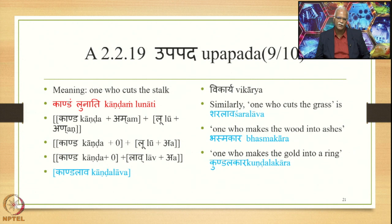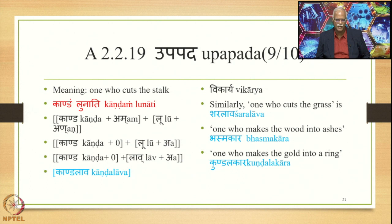For Vikarya Karma, one who cuts the stalk: Kanda Lunati is the Laukika Vigraha. We have Kanda plus Am plus Lu plus An as the Alaukika Vigraha Vakya. There is Samasa Saudhnya, then Supodhatu Pratipadika Yoho deletes the Am Pratyaya, then An is deleted by Tasya Lopaha, and the deleted An as a marker brings about substitution of the vowel in Lu, giving Kanda plus zero plus Lava plus A, and finally Kandalava as the derived compound output — the example of Vikarya Karma.